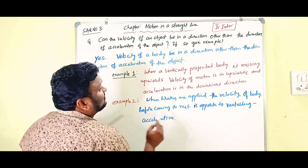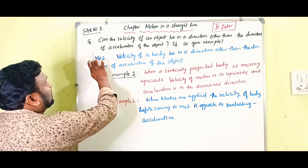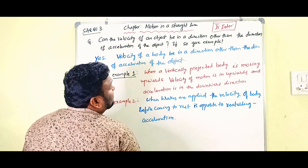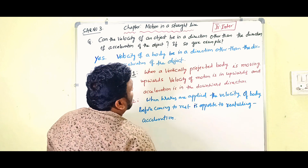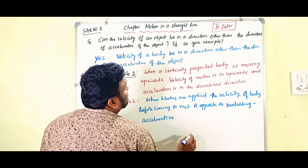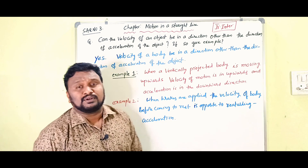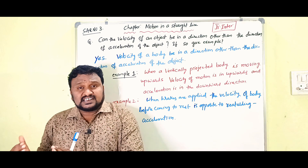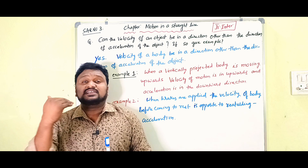This is short answer question number three in the chapter of Motion in a Straight Line, and it belongs to junior intermediate. The question is: Can the velocity of an object be in a direction other than the direction of acceleration of the object? If so, give an example.